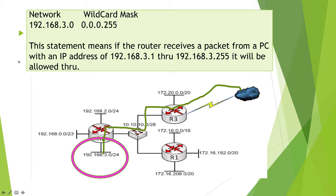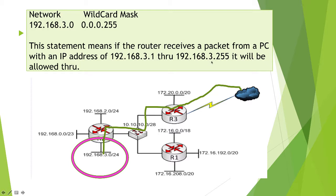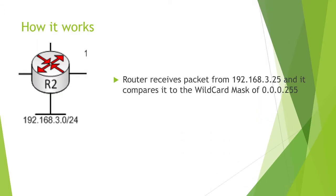What I'm telling the router is: if the router receives a packet from a PC with an IP address of 192.168.3.1 through 3.255, it will be allowed through. Wherever the ones are, I don't really care about it. The zero here must match — so in order to get through, you must have 192 in your first octet, 168 in the second octet, and 3 in the third octet. These bits all translate to ones, so anything from 1 through 255 will get through and be allowed to go to the internet.